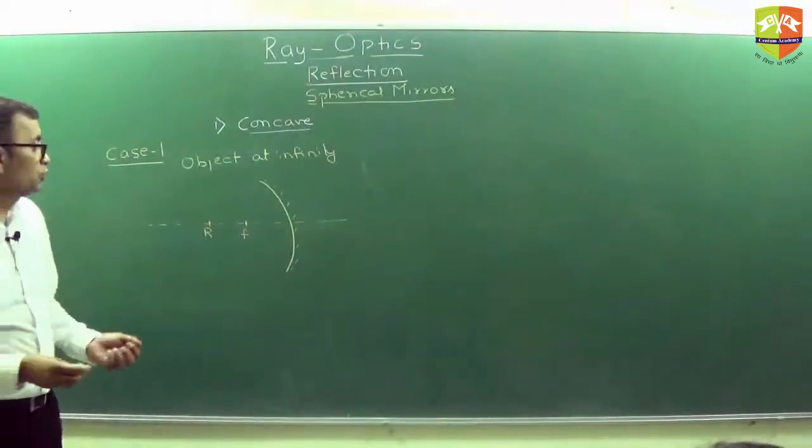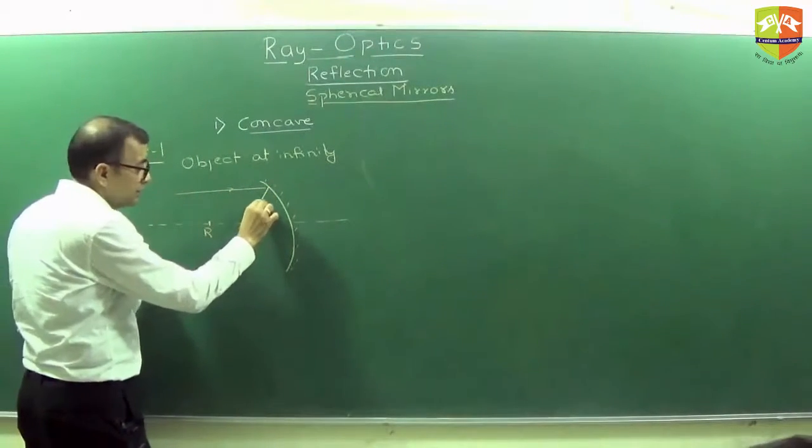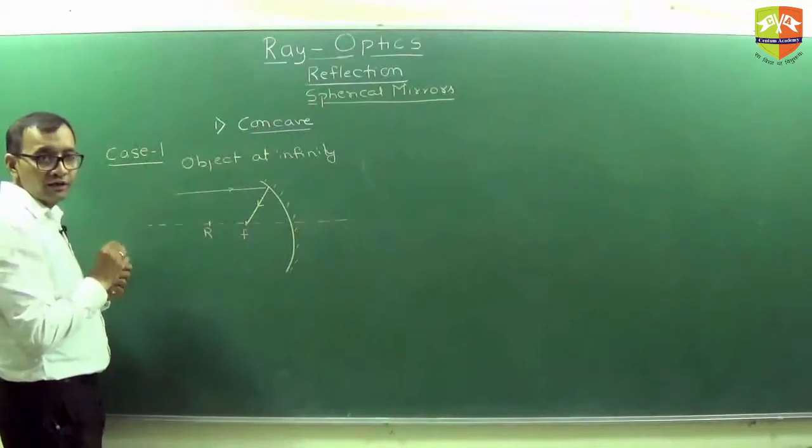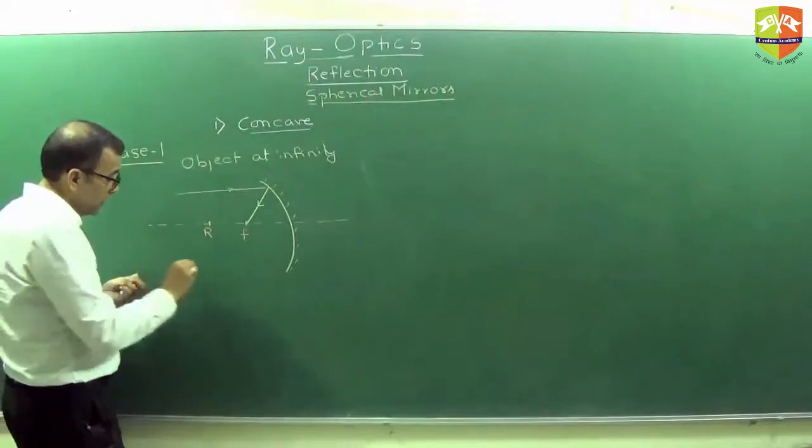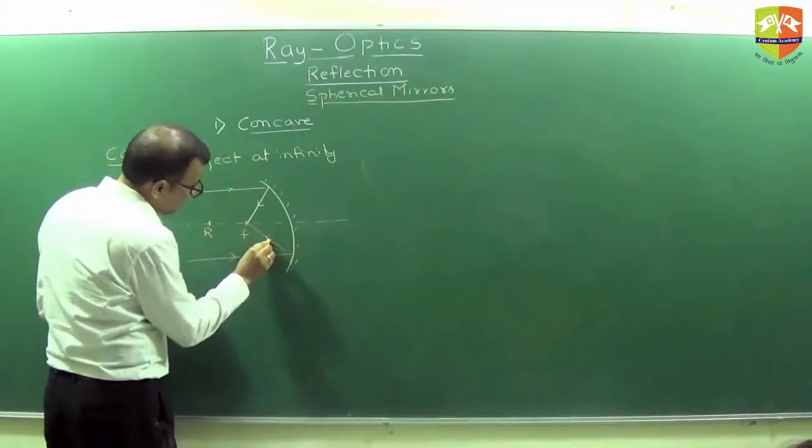So this is one ray. What will happen to this ray? Come to focus, right. You need at least two rays to form the image. Draw another parallel ray. What will happen to this ray? Again, focus.